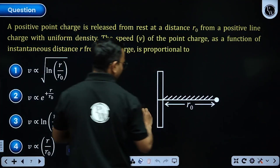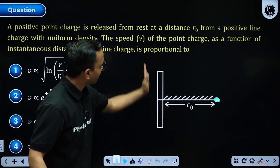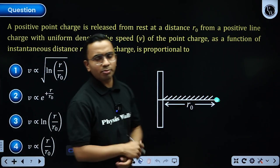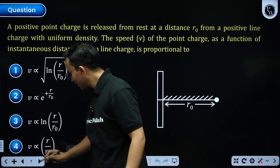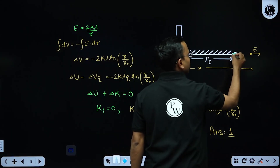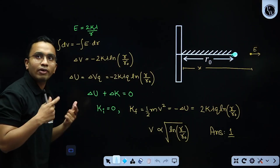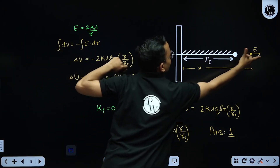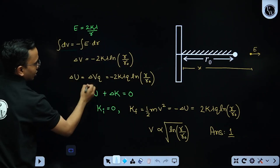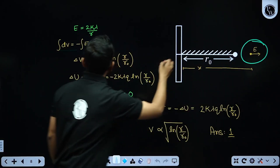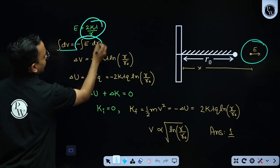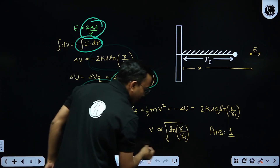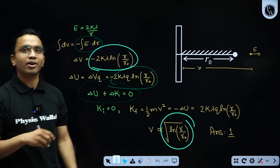Next question: a positive charge is released at distance r₀ from an infinitely long line charge, and we need to find its velocity when it reaches distance r. Apply conservation of mechanical energy. The electric field of an infinite line charge is 2kλ/r; integrating that gives the potential difference. From the potential energy difference and energy conservation, the velocity comes out proportional to √(r/r₀), which is option A.